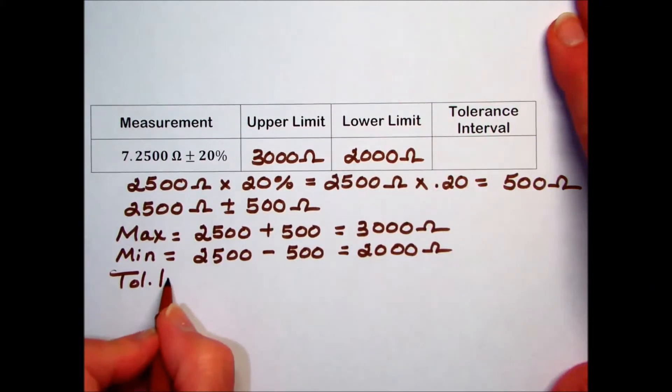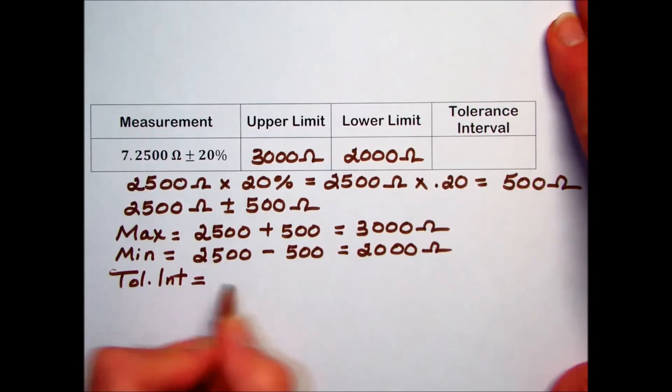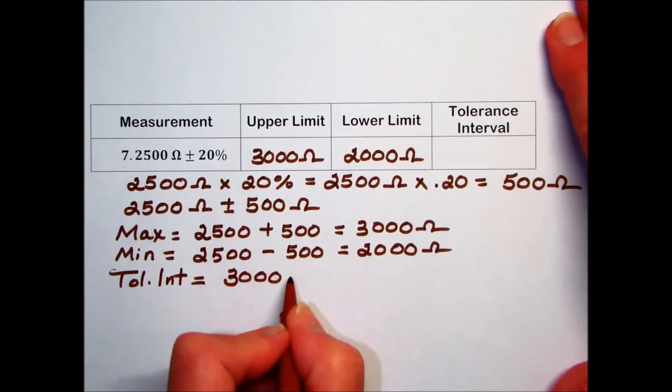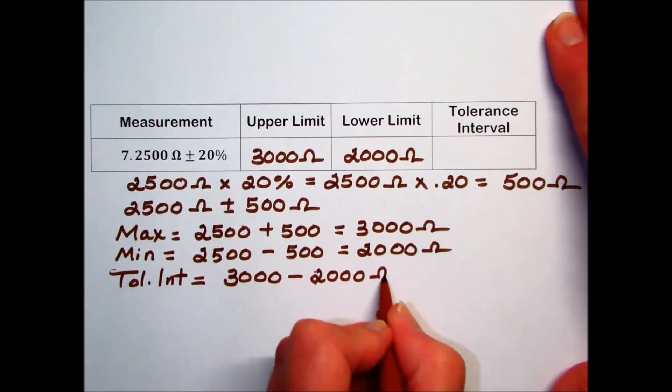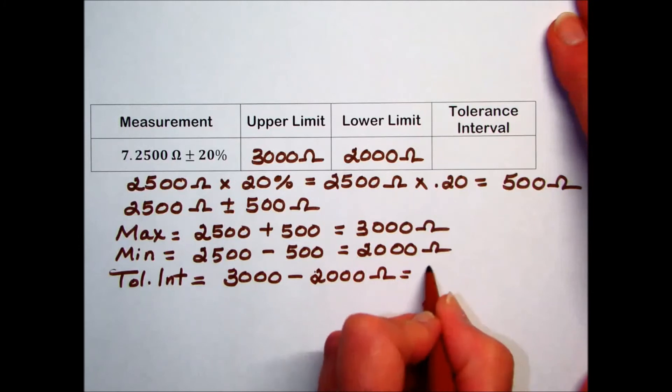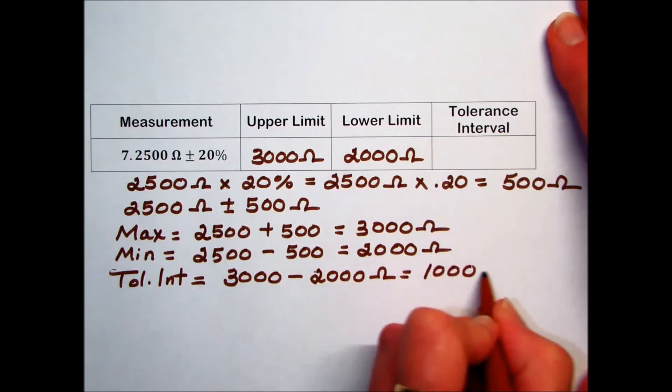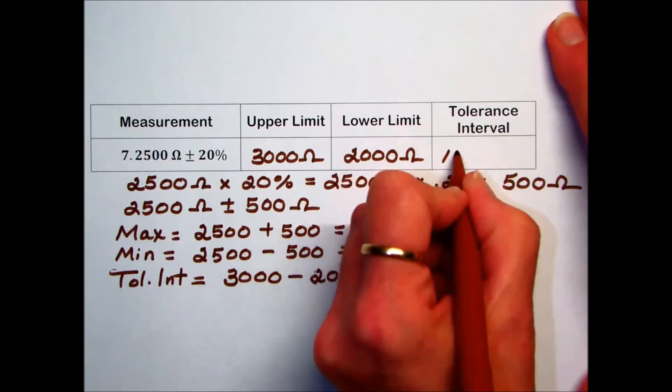Tolerance interval is the difference between the upper and the lower, or the maximum and the minimum. Our maximum or upper limit was 3000 ohms minus the minimum of 2000 ohms gives us a tolerance interval of 1000 ohms.